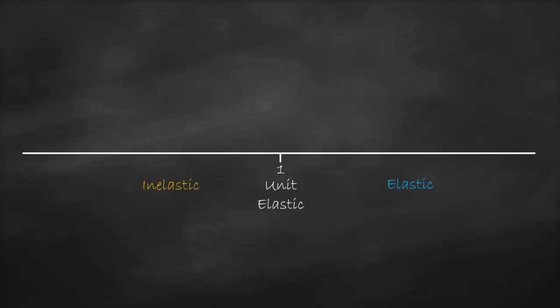We also have two extreme cases. The first one: if elasticity is equal to zero, it's called perfectly inelastic. The other extreme is if elasticity is equal to infinity, which means perfectly elastic. We can reflect these degrees of elasticity using graphs.